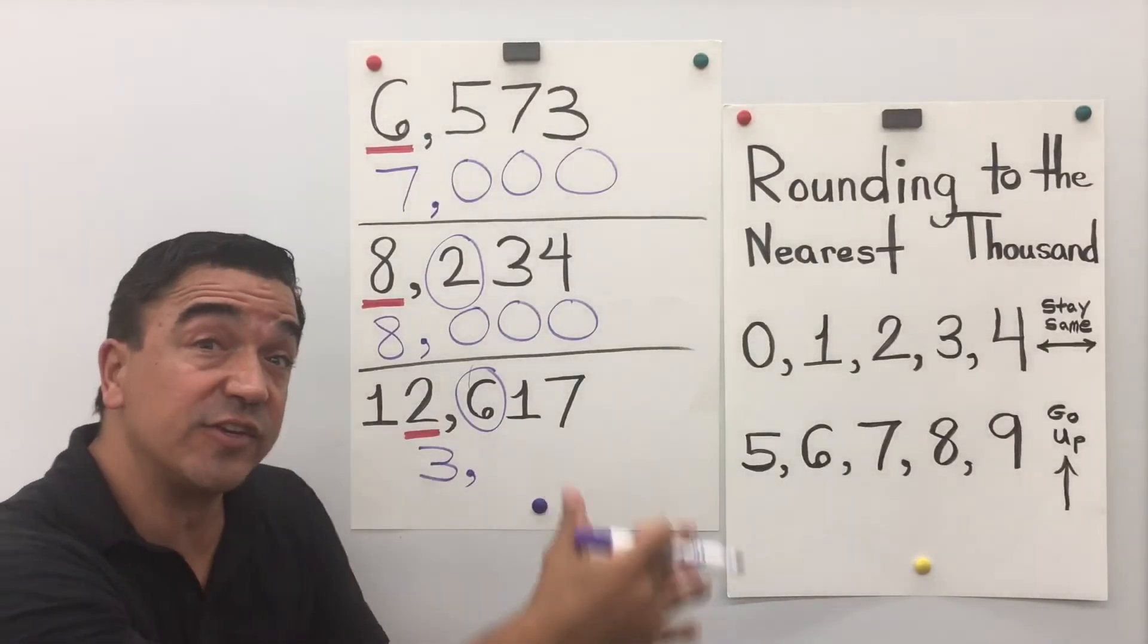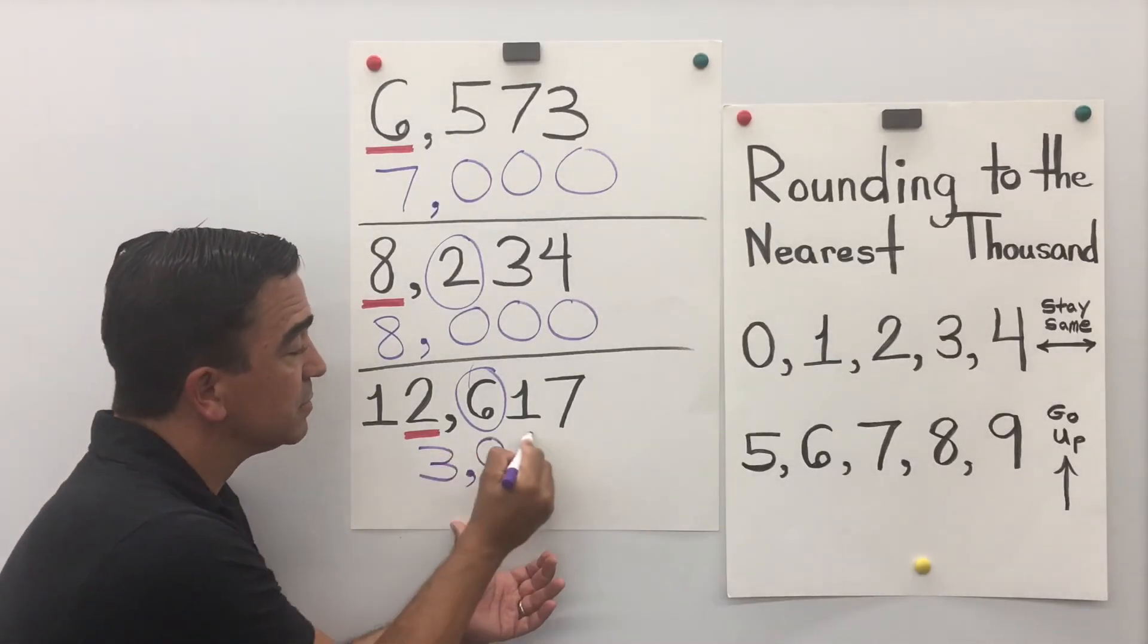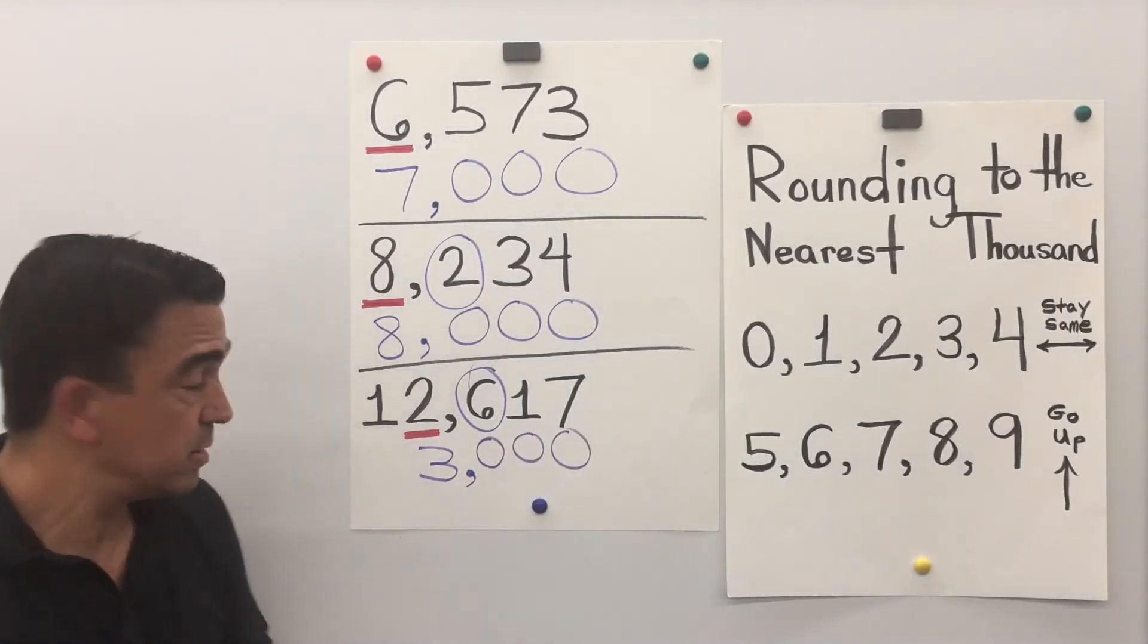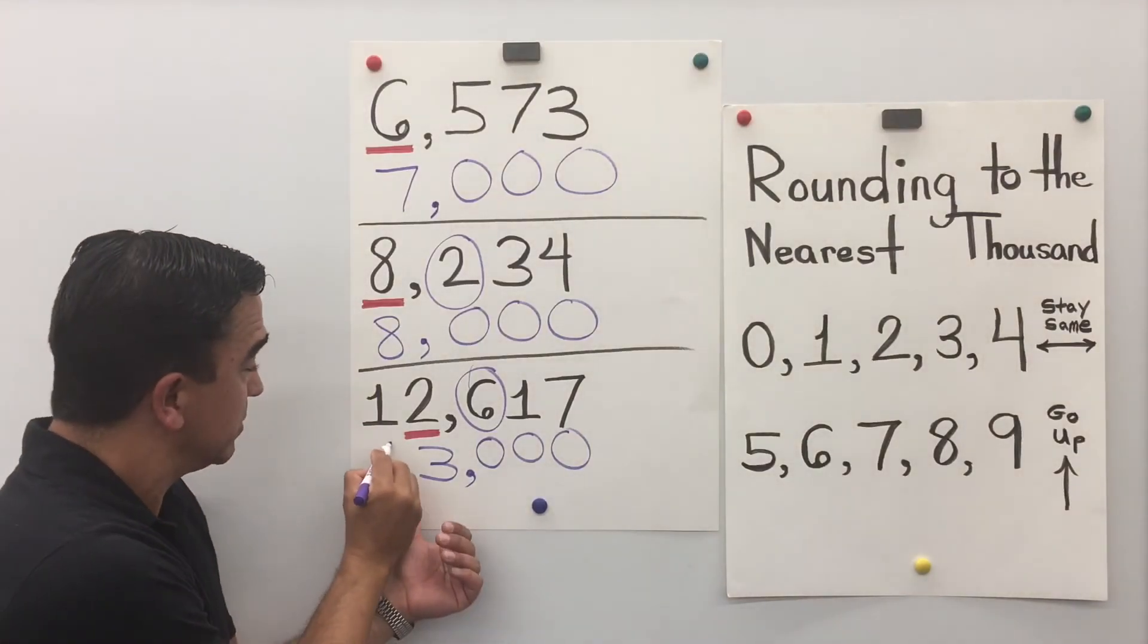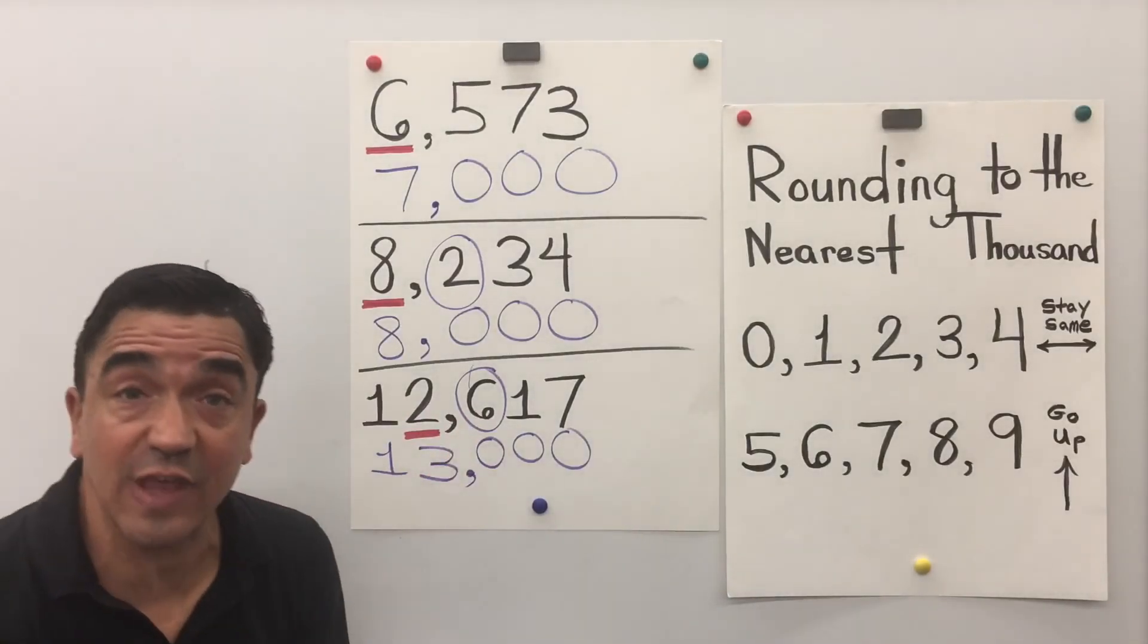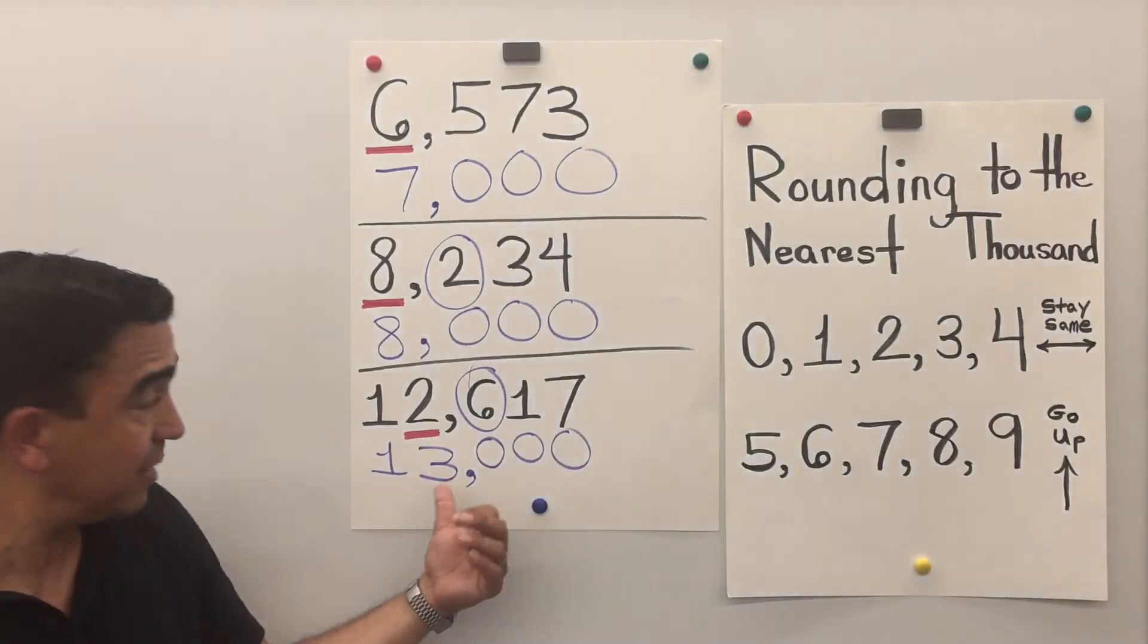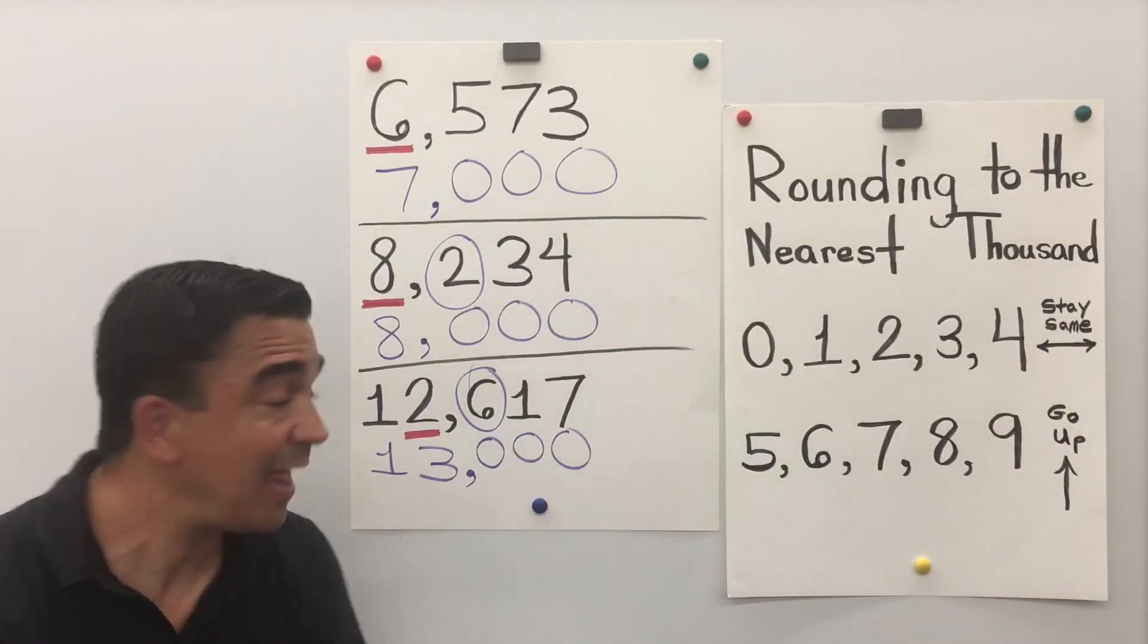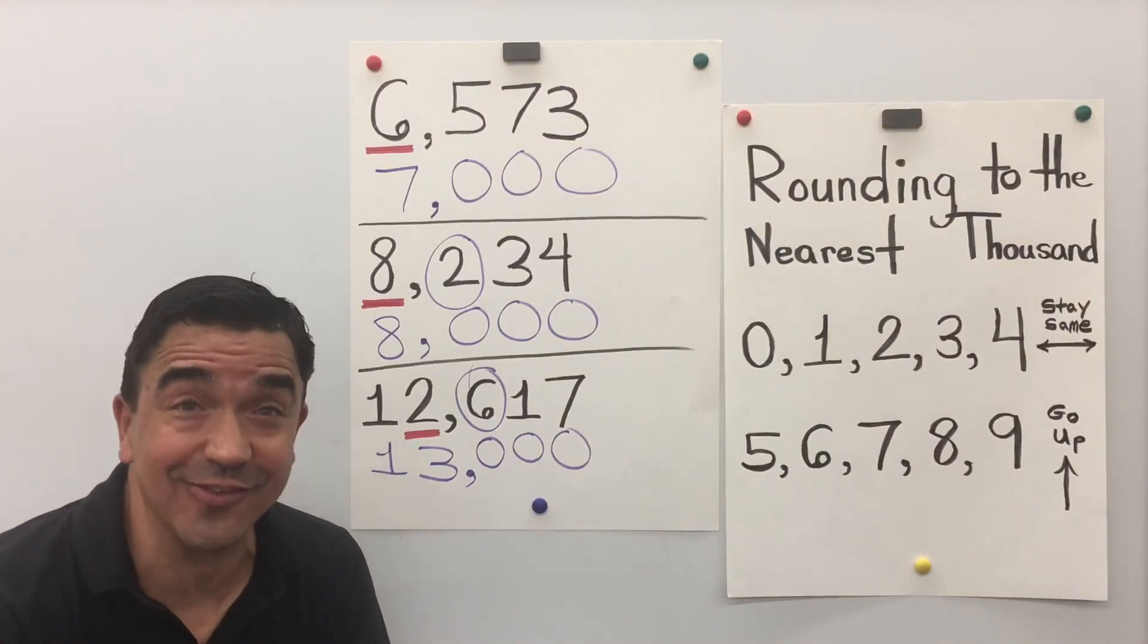The 3 digits after are going to become 0. And we're going to drop the 1. So, 12,617 rounded to the nearest thousand is 13,000. That concludes our lesson.